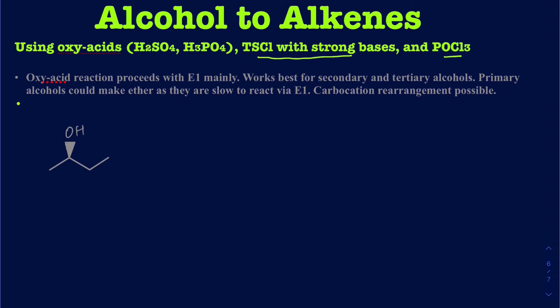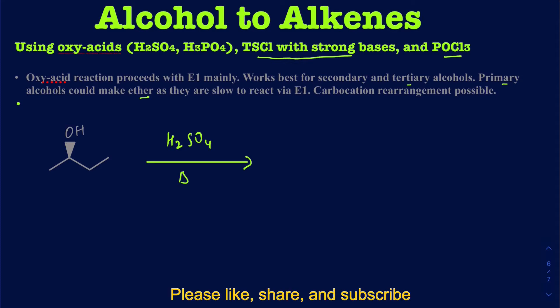Let's start with the oxyacid. You can use sulfuric acid or phosphoric acid, and it typically involves a lot of heating. Anytime you're trying to do these elimination reactions converting alcohols to alkenes, you're going to have to heat the reactions to a relatively high temperature. These mostly proceed via E1 reactions, and they work best for secondary and tertiary alcohols because primary alcohols could also make ethers — they'd be slow to react through an E1 mechanism. Since you're forming a carbocation via the E1 mechanism, there is a possibility of carbocation rearrangement as well.